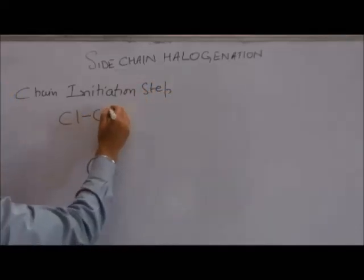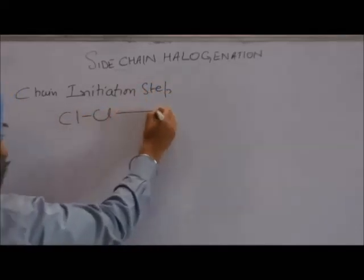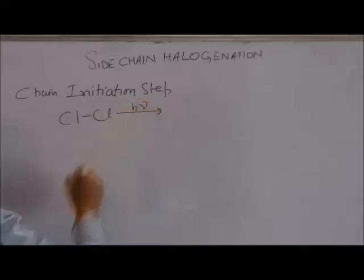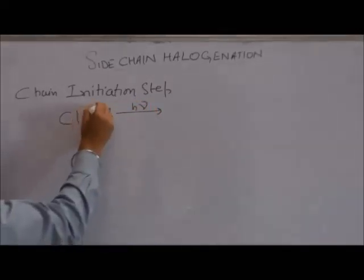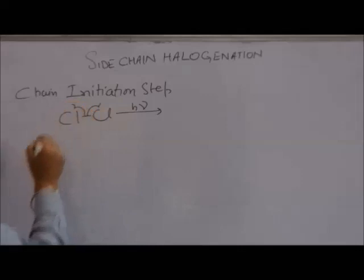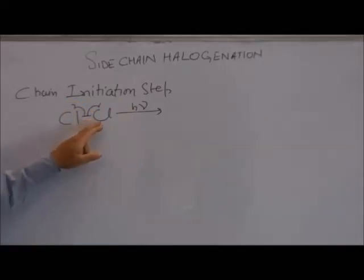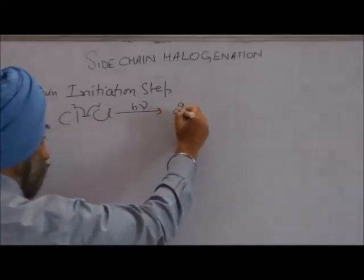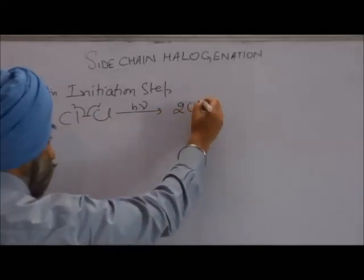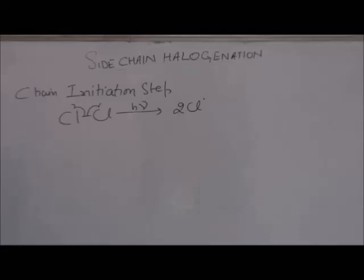There is a chlorine molecule in the presence of sunlight. It undergoes homolytic cleavage. Each electron goes to one chlorine atom, and we get two chlorine free radicals. This is the chain initiation step.